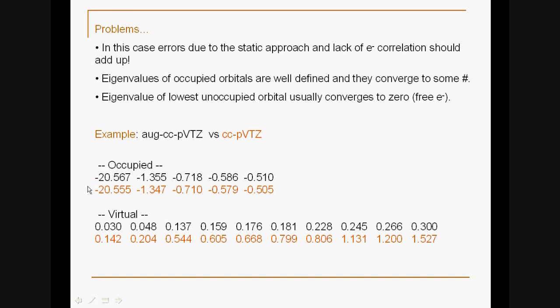These were the occupied and these are the virtual orbitals. One thing we can immediately notice is that the difference in orbital energies obtained with these two basis sets for the occupied orbitals is much smaller compared to the difference in energies obtained for the virtual orbitals. Here we have usually difference in the second or third digit, while here we have difference in the first or second digit. This illustrates these two statements.